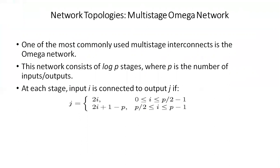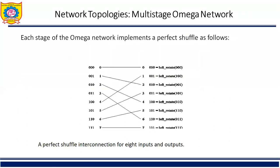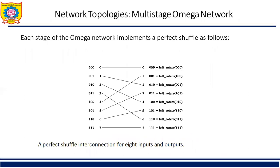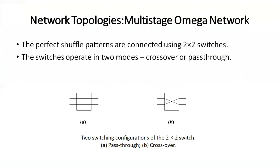One of the most commonly used multi-stage interconnections is the omega network. The omega network is similar to the crossbar but uses 2×2 switches with 2 inputs and 2 outputs. Sometimes the omega switch is in pass-through mode as shown in figure A, and sometimes it is in crossbar mode as shown in figure B. The perfect shuffle patterns are connected using these 2×2 switches. Each stage of the omega network implements a perfect shuffle, where the input is shuffled and interconnected to the output.